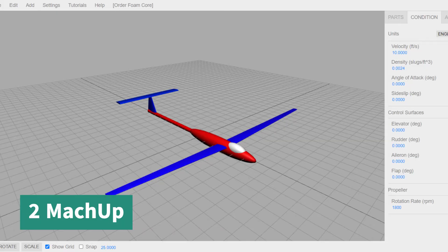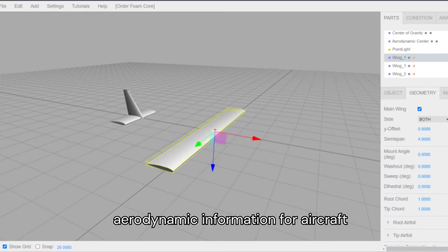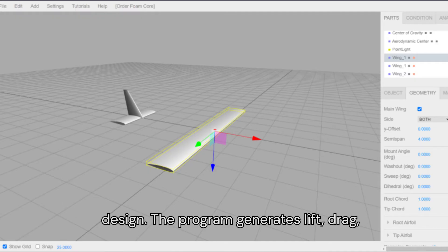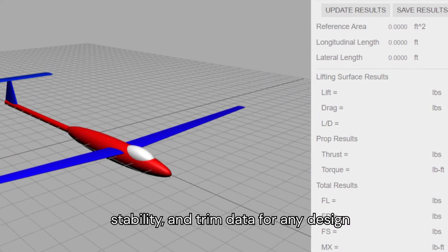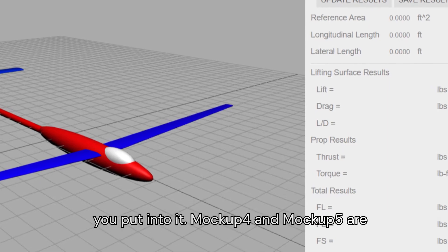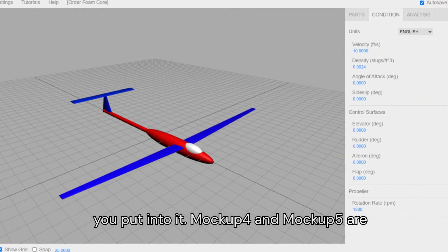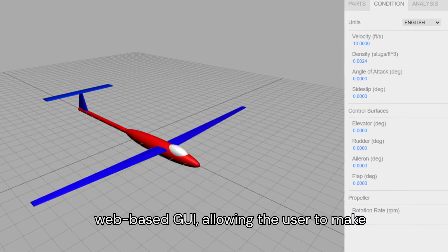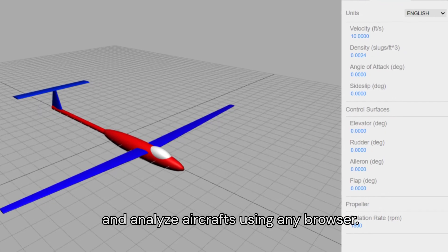Number 2: Mockup. Mockup is a free, easy-to-use online software program that generates aerodynamic information for aircraft design. The program generates lift, drag, stability, and trim data for any design you put into it. Mockup 4 and Mockup 5 are web-based GUIs, allowing users to make and analyze aircraft using any browser.